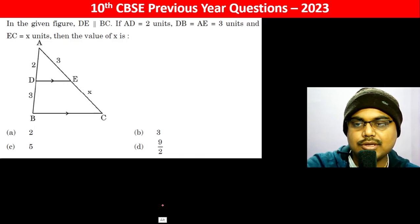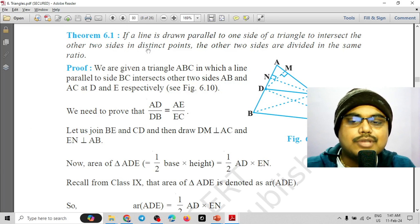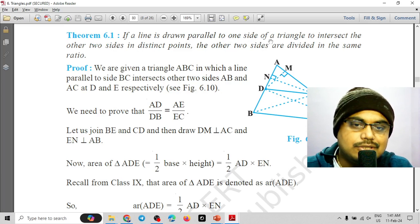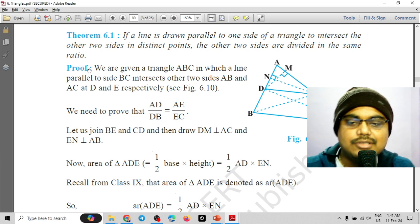This theorem is used: If a line is drawn parallel to one side of a triangle to intersect the other two sides in distinct points, the other two sides are divided in the same ratio.